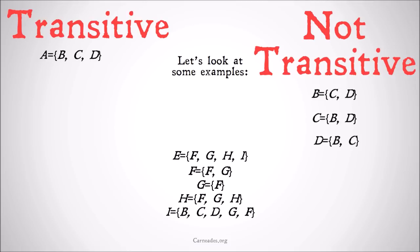What about I? I has as its members B, C, D, G, and F. B is not a member of E, so I is not a subset of E — it couldn't even be a subset since it has five members while E only has four. There's no way all five of those unique members could be found in E. So E is not transitive.